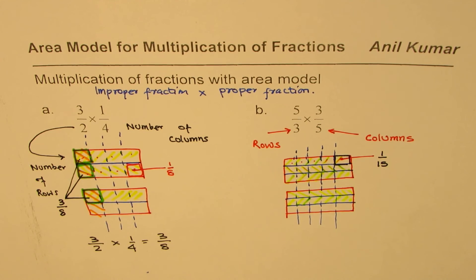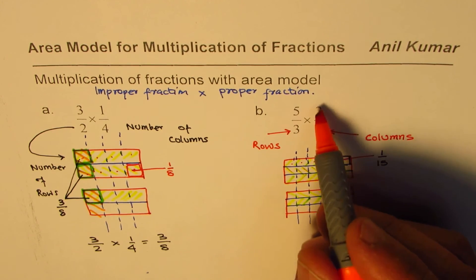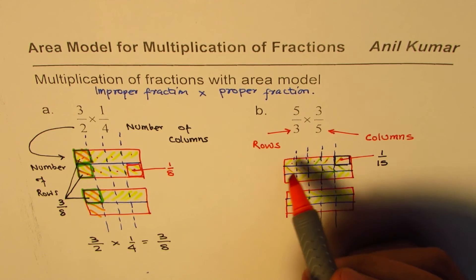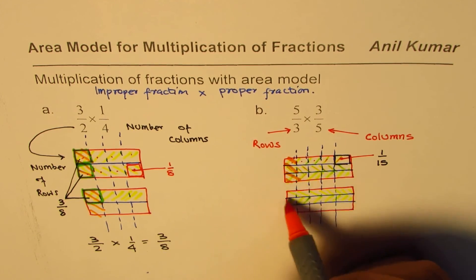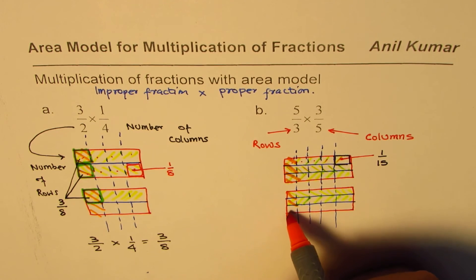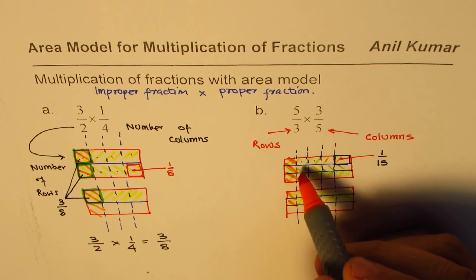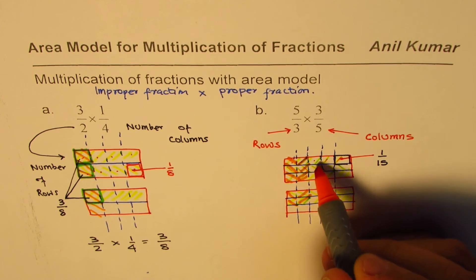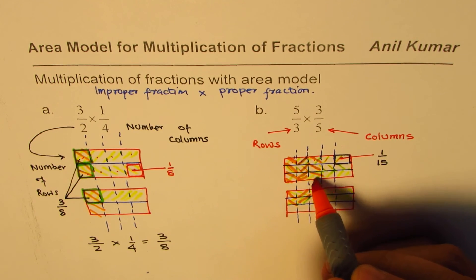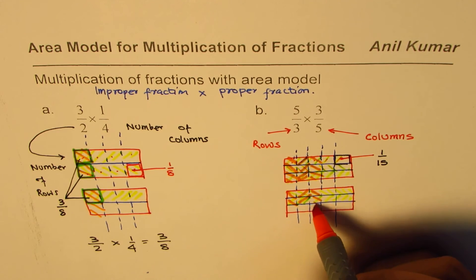Now we'll select 3 fifths. 3 fifths. So these are my fifths. So we'll select 3 of them. So we have 1. So I'm not shading this one now. We're saying times 2 and 3. So the common portions for 3 fifths have been shaded.